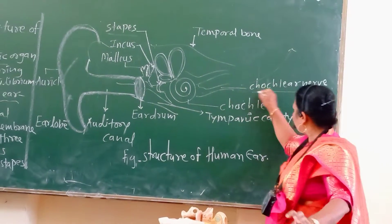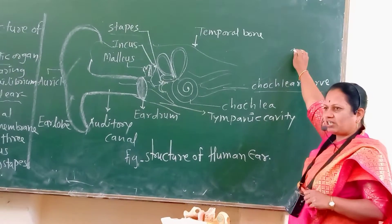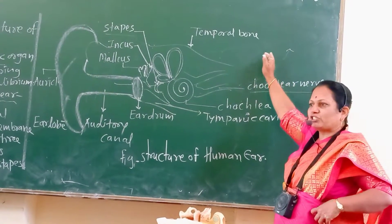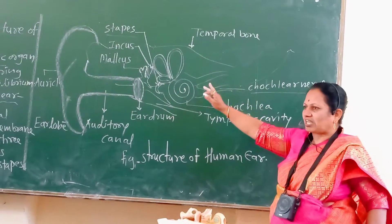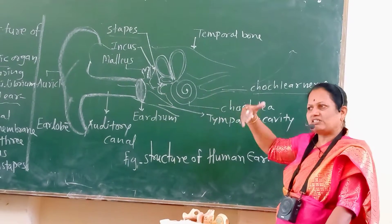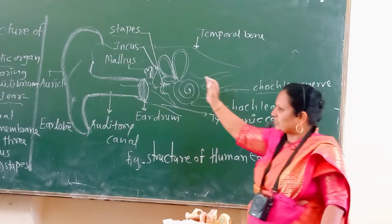The nerve reaches to the temporal region, where there is identification of the sound — the decibels of the sound, variations in the sound, and so on.